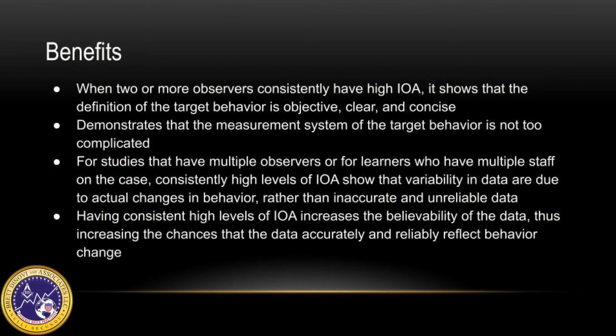When two or more observers consistently have high IOA, it shows that the definition of the target behavior is objective, clear, and concise. It also demonstrates that the measurement system of the target behavior is not too complicated. For studies with multiple observers or learners with multiple staff on the case, consistently high levels of IOA show that variability in data is due to actual changes in behavior rather than inaccurate and unreliable data.